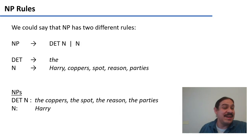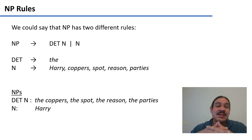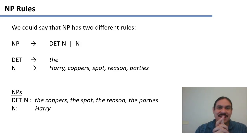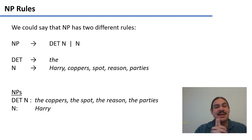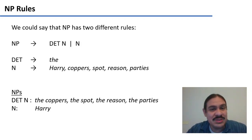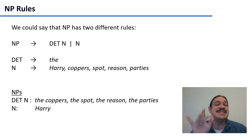We have the determiner as the set of one element, 'the', and the noun as a set of five elements: Harry, coppers, spot, reason, parties. As you can see, we can have two types of noun phrases according to these rules. We can have noun phrases that are determiner and noun, such as the coppers, the spot, the reason, and the parties. And there's another type of noun phrase which is just noun, like Harry, parties, or spot. So these rules can describe the structure of a noun phrase in English, at least for this little toy set.